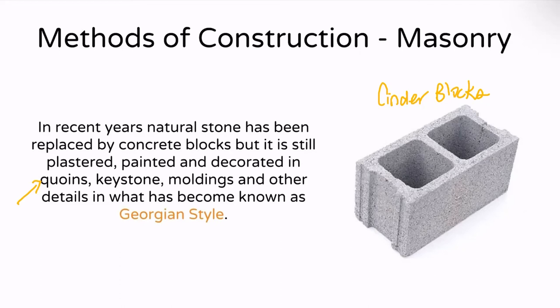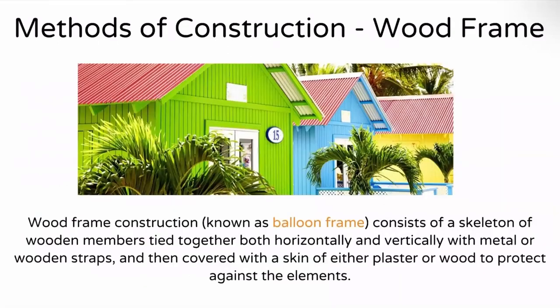The Georgian style is named not after Georgia, but after King George, meaning it came about during the reign of King George. The second method of construction is wood frame, also known as balloon frame. It includes a skeleton of wooden members tied together horizontally and vertically with metal or wooden straps, then covered with a skin of plaster or wood to protect it from the elements outside.